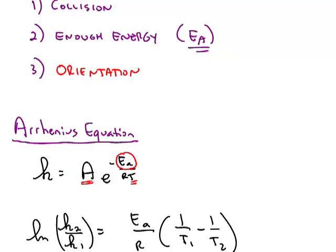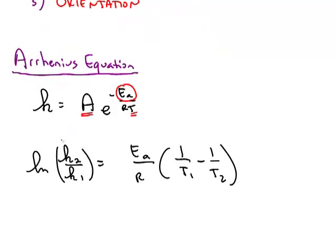Normally, the Arrhenius equation is going to be used in this class in a slightly different form, which is also on the formula sheet. If we look at the same reaction at two different temperatures, this pre-exponential factor A will drop out of the equation and we're left with a more useful form of the Arrhenius equation.